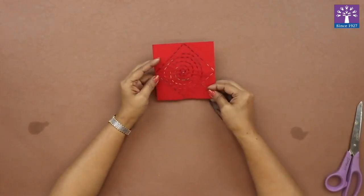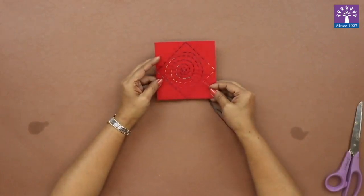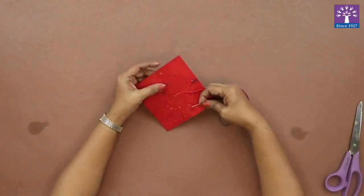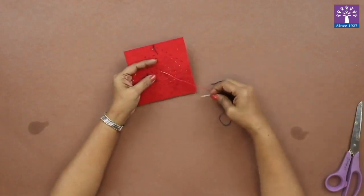So we have finished doing all the running stitch on the design that we have drawn. Now in the reverse side we are going to put a knot.